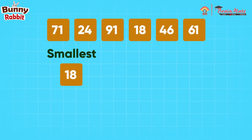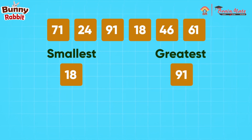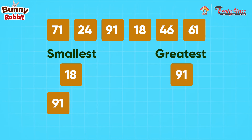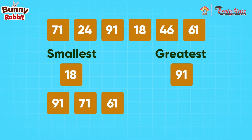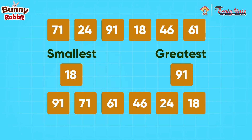Smallest number is 18, greatest number is 91. Descending order is 91, 71, 61, 46, 24, 18.